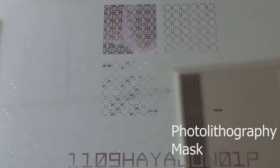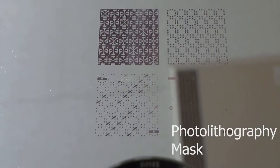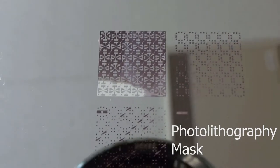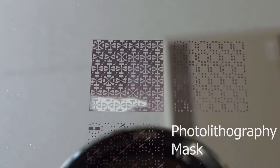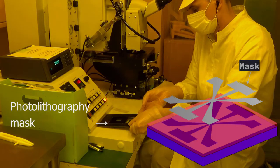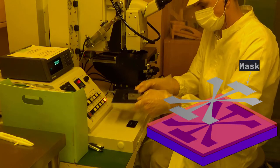The pattern we want to produce is recorded on a photolithography mask, which is made of chromium on a glass window. We place this photolithography mask inside a machine called a mask aligner.